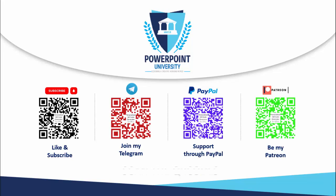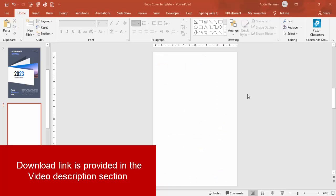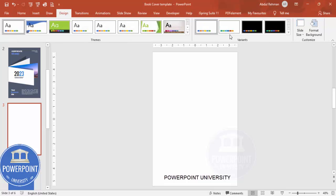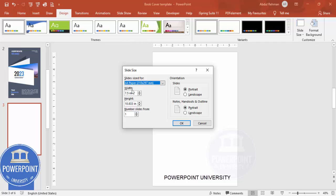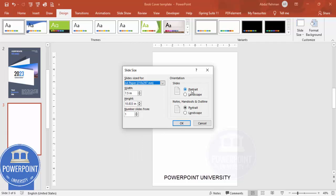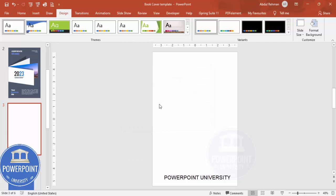Let's start the tutorial. Add a new slide and change the slide size to A4. To do this, go to Design, then Slide Size, select Custom Slide Size, and from the drop-down list choose A4 size. Make sure to select Portrait orientation and click OK.